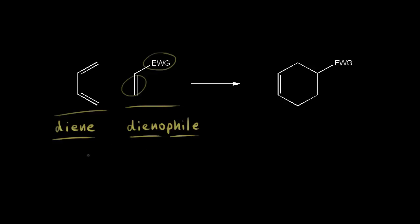This is what's called a pericyclic reaction — a one-step reaction that proceeds through a cyclic transition state. If we think about electron density flowing from the diene to the dienophile, we could start with these pi electrons moving in here to form a bond between these two carbons. Then these pi electrons would move in to form a bond between the next two carbons. And finally, these pi electrons would move over here. Think about all six pi electrons moving at the same time.